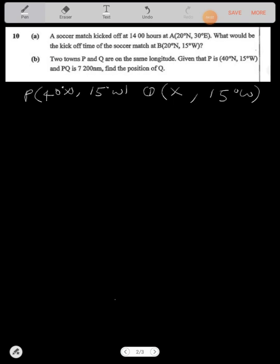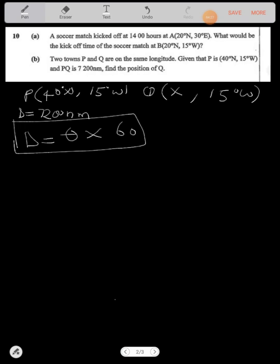And we also have the distance between the two places as we're given it to be 7,200 nautical miles. Now how can you find the position of Q? Now we have the same longitude. That means to find the distance, distance is equal to theta times 60. That's the formula for distance. In most paper one questions you use this for finding distance.